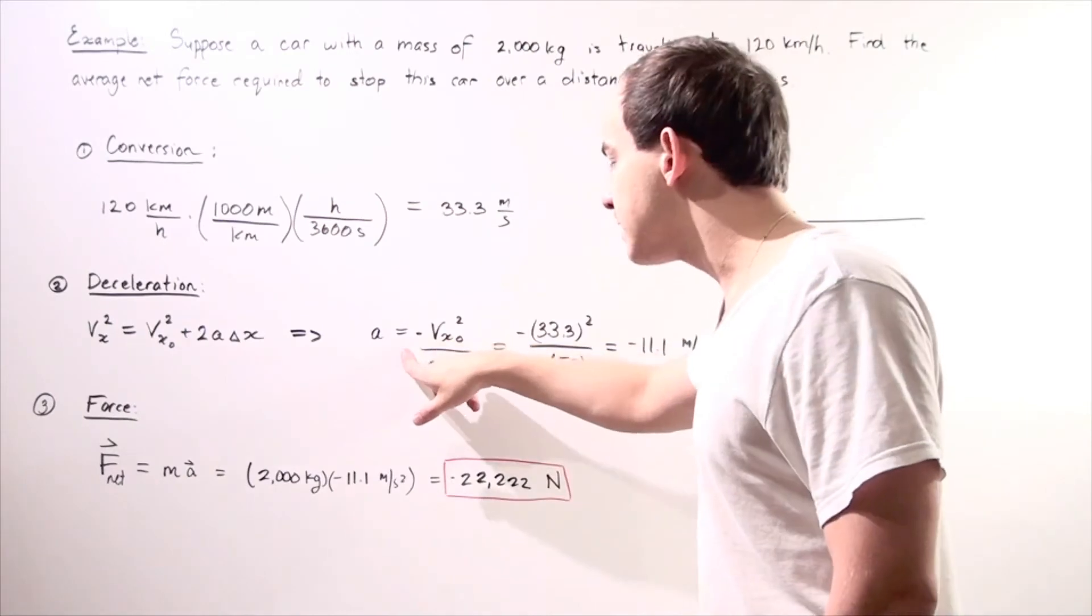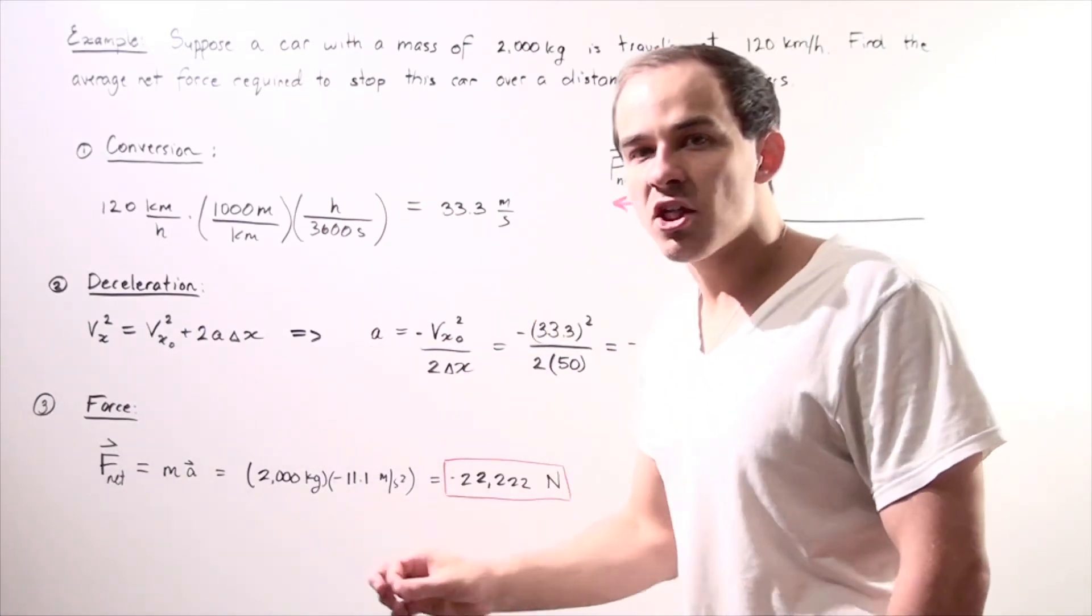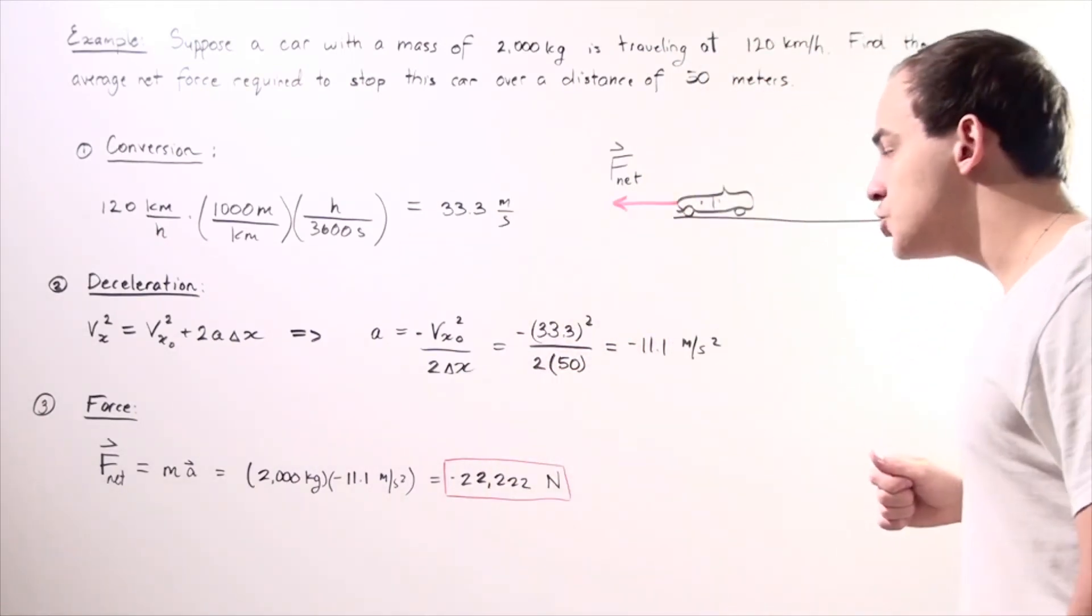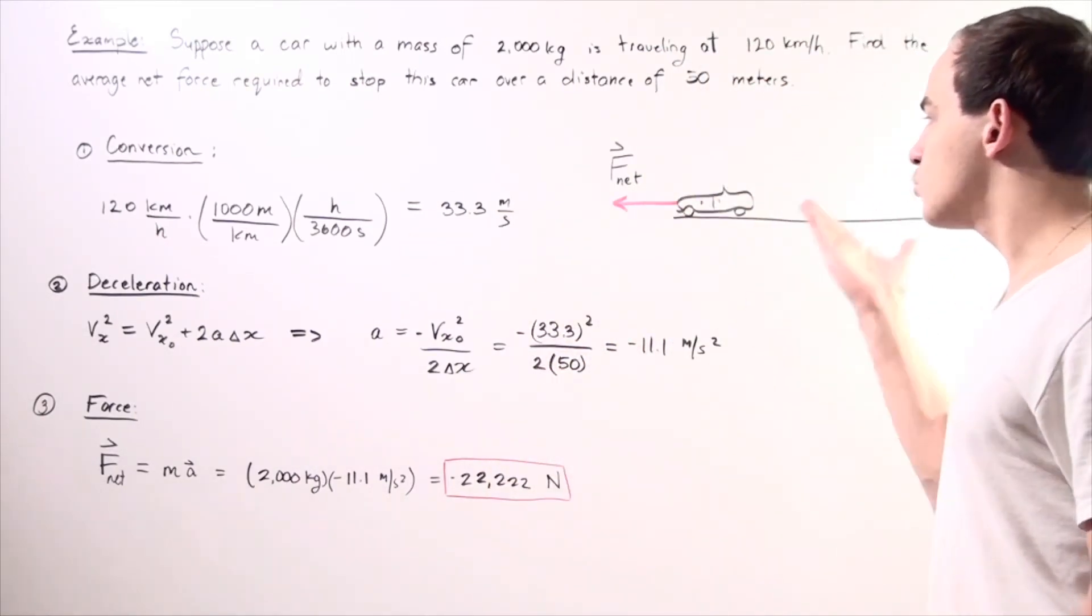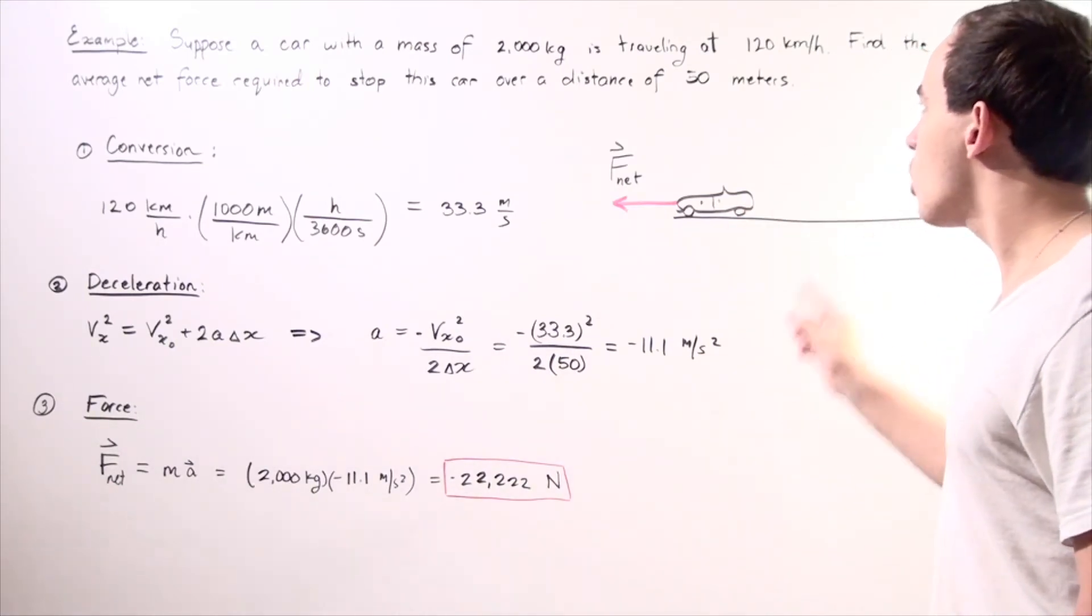So we see that our acceleration is actually the deceleration. It's acceleration in the opposite direction of motion. And that makes sense because we want our car to stop. We want the velocity to decrease to zero meters per second.